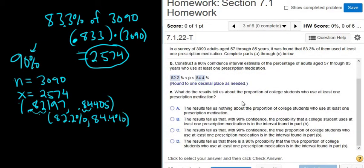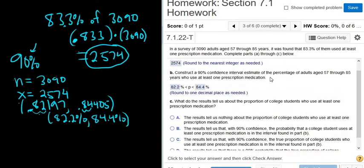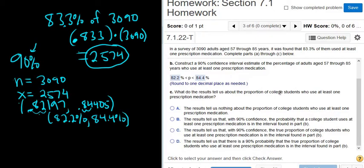What do the results tell us about the proportion of college students who use at least one prescription medication? That's kind of a weird question, because the question is, the confidence interval was created for the adults who were age 57 through 85. So this question doesn't really make too much sense, because the confidence interval should tell us nothing about college students. The results tell us nothing about the proportion of college students who use at least one prescription medication, because this confidence interval was constructed for adults that's 57 through 85.